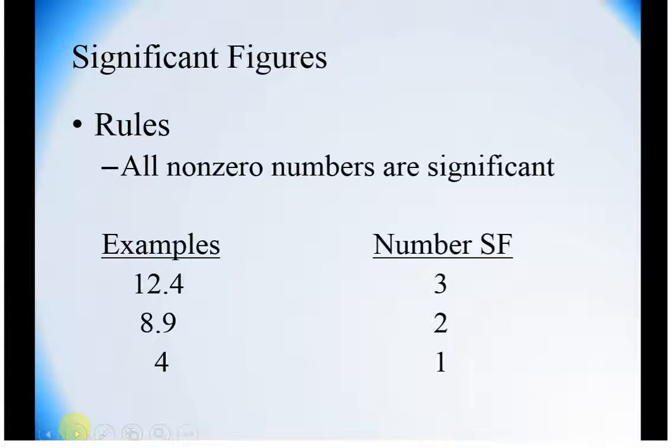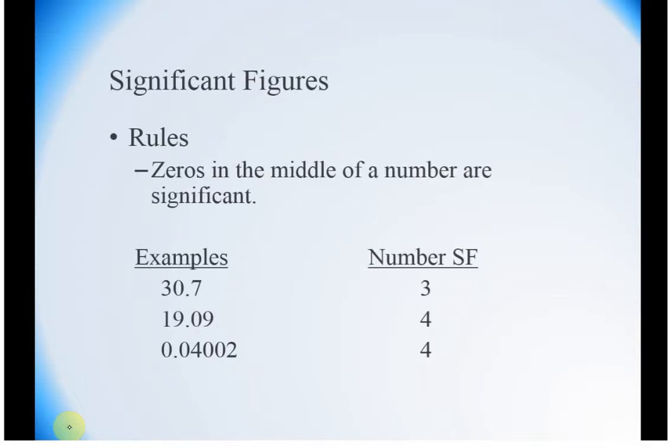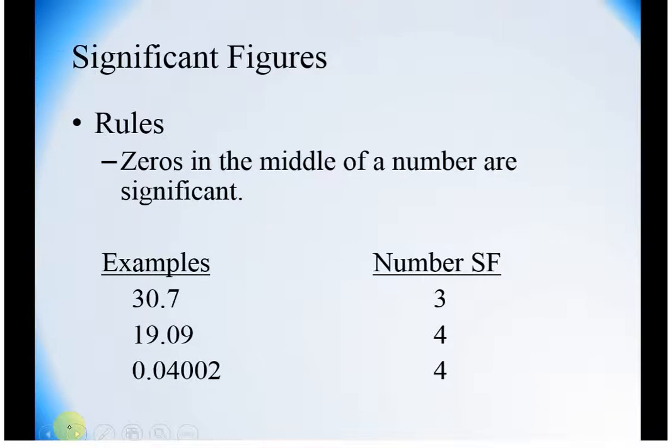For significant figures, there are four to five rules. The first is all non-zero numbers are significant. 12.4 is three sig figs. Basically 1, 2, 3, 4, 5, 6, 7, 8, 9 are all significant no matter what. 8.9 has two, 4 has one significant figure. Zeros sandwiched between two non-zero numbers are significant. So 30.0 has three sig figs, 19.09 has four.